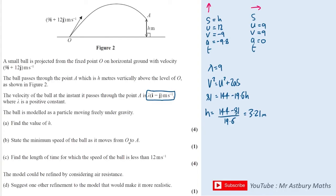Part B says: state the minimum speed of the ball as it travels from O to A. The horizontal component remains constant at 9 throughout. The vertical component starts at 12, and at the maximum point it will be 0 - the ball stops moving upward and starts moving downward. So the minimum speed occurs when the vertical component is 0. Speed is the square root of the components squared, so minimum speed equals 9.